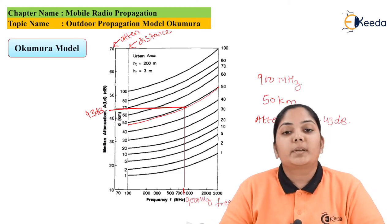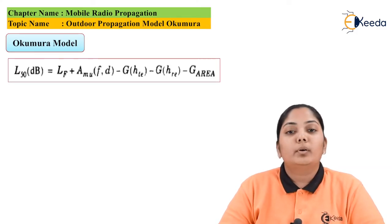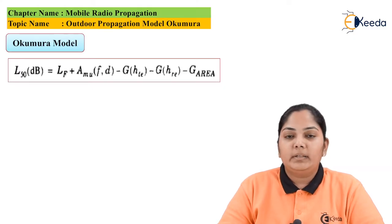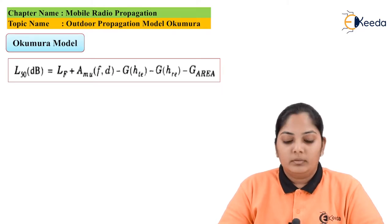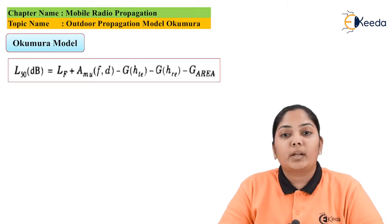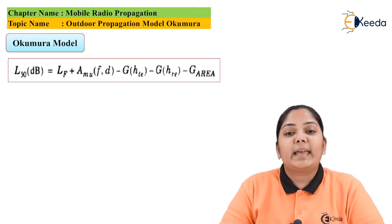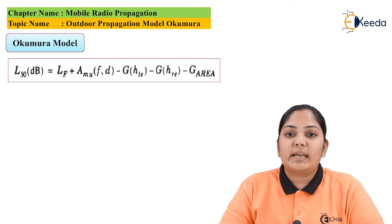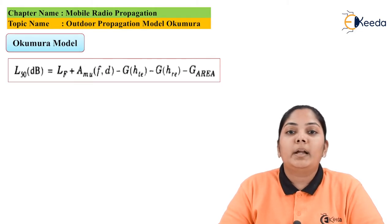Please remember this number — 43 dB — as we are going to use exactly the same scenario during the numericals. The Okumura path loss equation is: L50(dB) = Lf + Amu(F, D) − G(HTE) − G(HRE) − G(area), where Lf is the free space propagation path loss, Amu is the median attenuation as a function of frequency and distance, G(HTE) is the transmitter antenna gain, G(HRE) is the receiver antenna gain, and G(area) is a correction factor depending on the type of area.